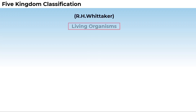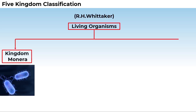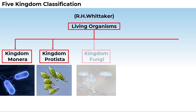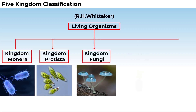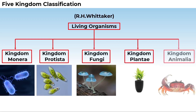R.H. Whittaker, in 1969, proposed a five-kingdom classification. The kingdoms defined by him were named Kingdom Monera, Kingdom Protista, Kingdom Fungi, Kingdom Plantae, and Kingdom Animalia.